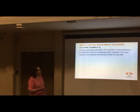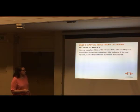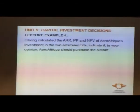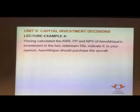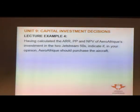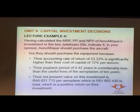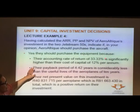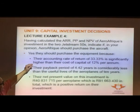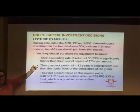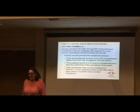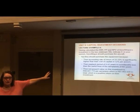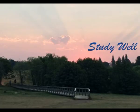Most companies have a target weighted average cost of capital, and if a project's return exceeds the WACC, we tend to invest. We often use more than one method and compare them. Looking at our example: the net present value was over 40 million — good. The payback period was 4.4 years against a useful life of 10 years — also good. The accounting rate of return was 33.3% against a cost of capital of 12% — good. All three methods say this is a project worth investing in. You might be asked to justify your decision.